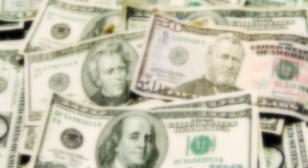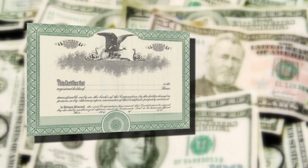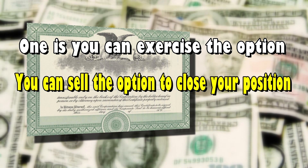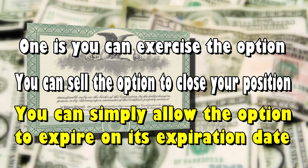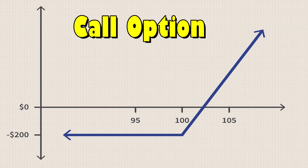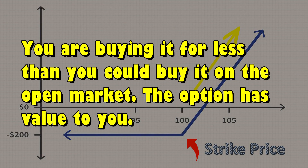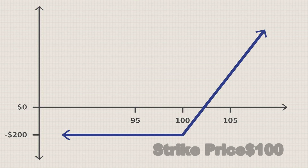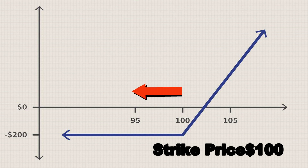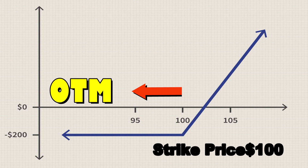Before we go any further, there are two other terms you need to know: in the money and out of the money. Once you've bought an option, there are three things you can do with it: exercise the option, sell the option to close your position, or simply allow the option to expire on its expiration date. When you buy a call option, you want the stock price to rise above the strike price. As long as the stock price is above the strike price, your option is considered in the money, or ITM. If you exercise the call option and buy the stock at the strike price, you're buying it for less than you could buy it on the open market — the option has value to you. If the stock price falls below the strike price, it is considered out of the money, or OTM. You wouldn't exercise an option to buy at a strike price that is higher than the current market price of the stock.